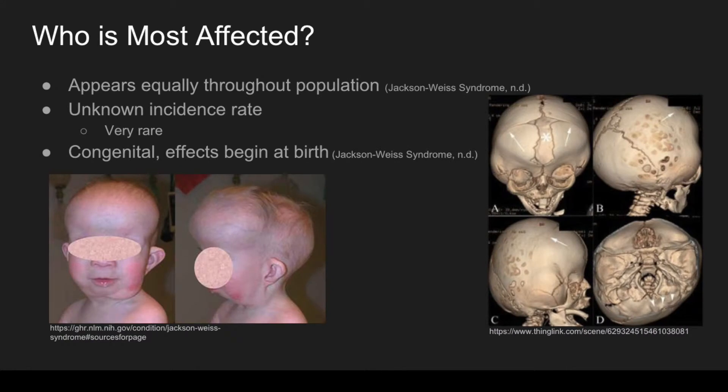Who is most affected? Jackson-Weiss Syndrome appears equally throughout the population. We're unsure what the incidence rate is exactly. It seems that each different race is equally affected by it, as well as equal effect between genders.